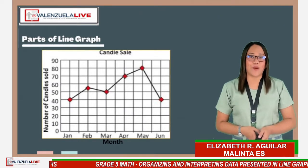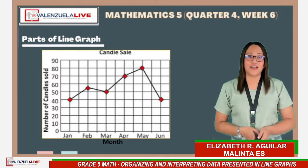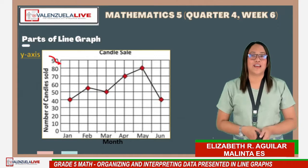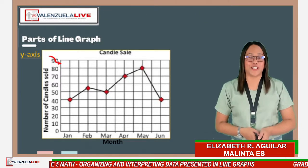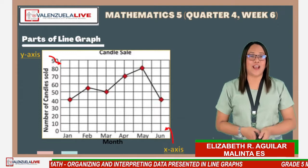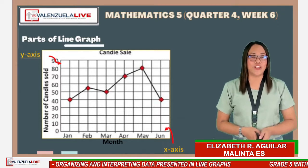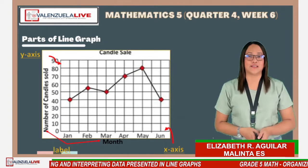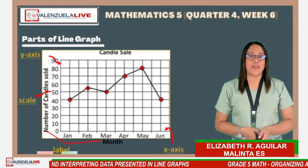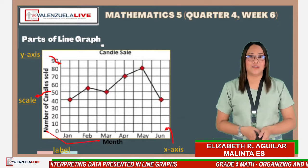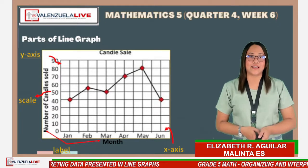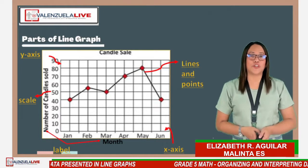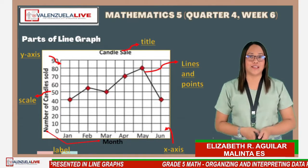Here are the parts of the line graph. We have the y-axis, which is the vertical line, and the x-axis, which is the horizontal line. We also have labels, the scale which is written on the y-axis, lines and points, and of course the title of the line graph.